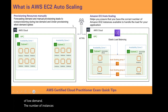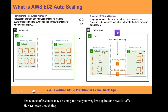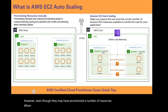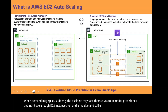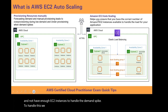However, even so, they may have provisioned a number of resources when demand spikes suddenly. The business may find themselves under-provisioned and not have enough EC2 instances to handle the demand spike. To handle this, we have Amazon EC2 autoscaling.